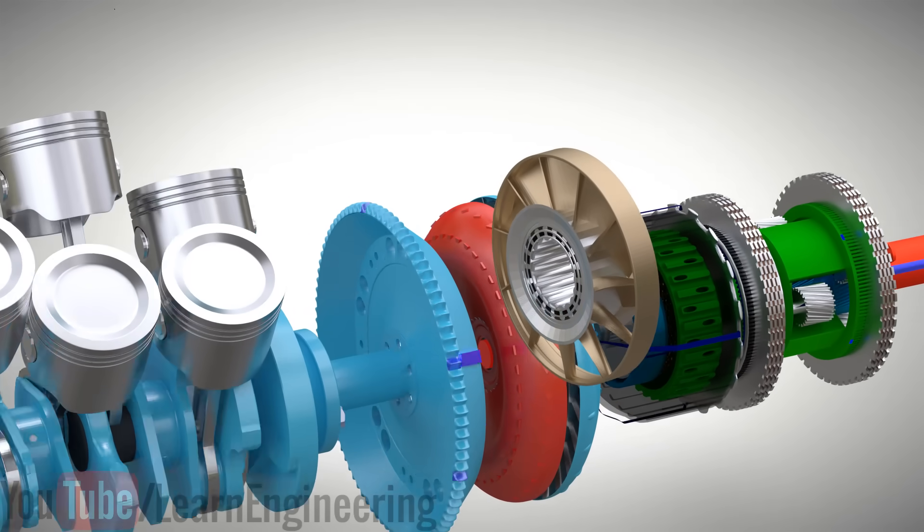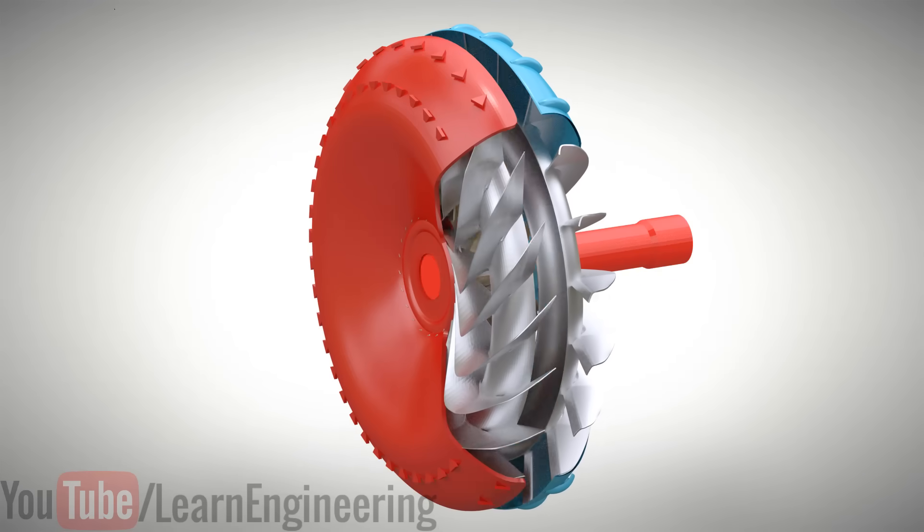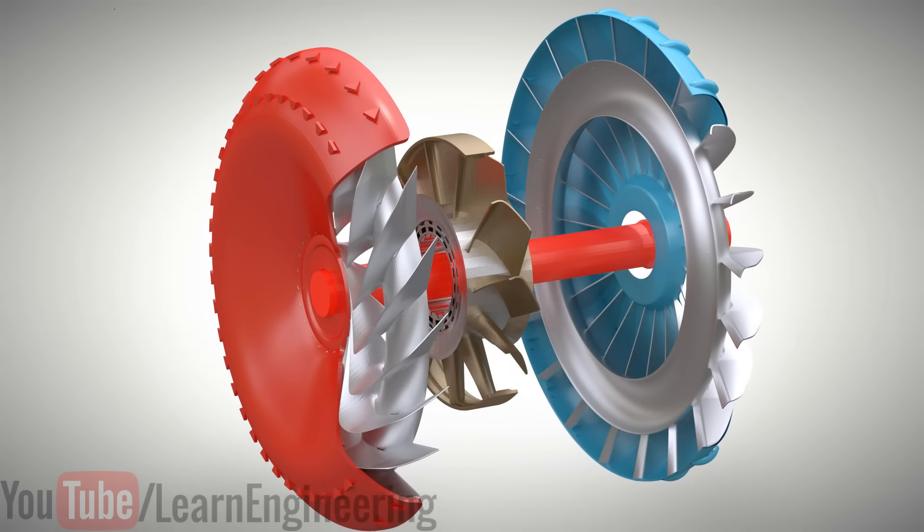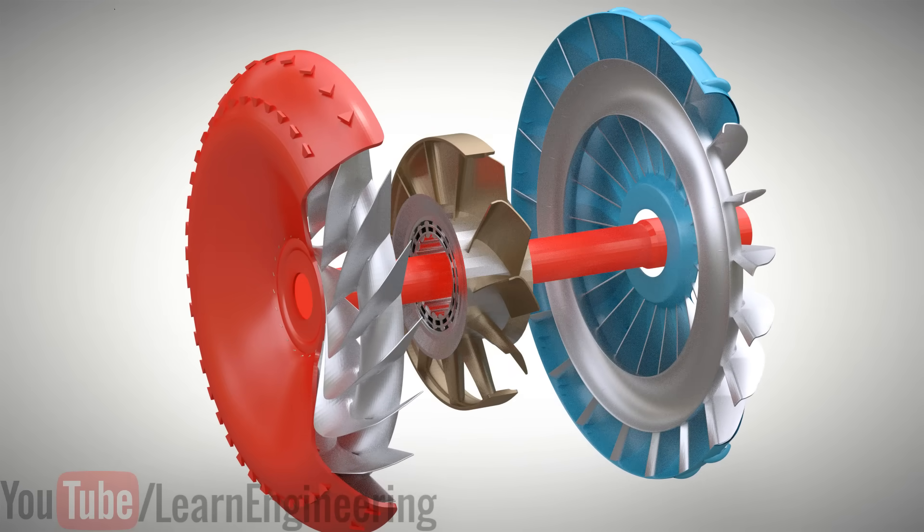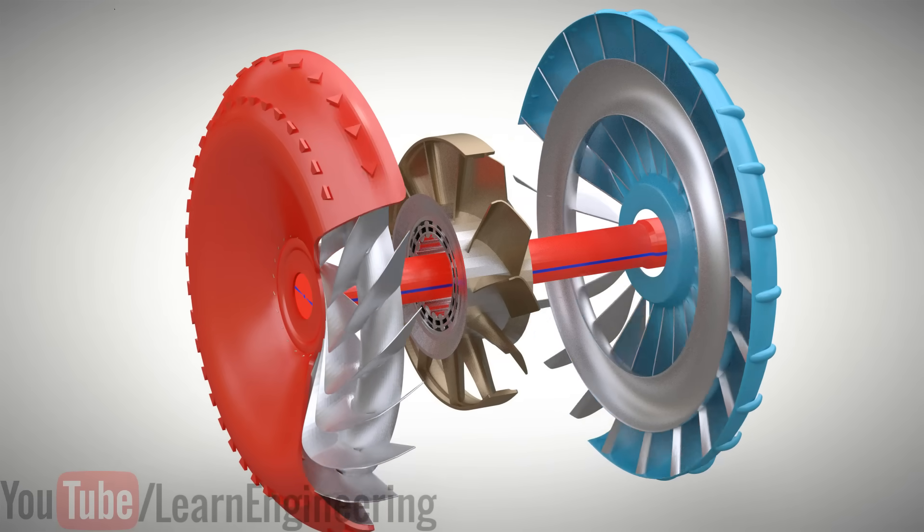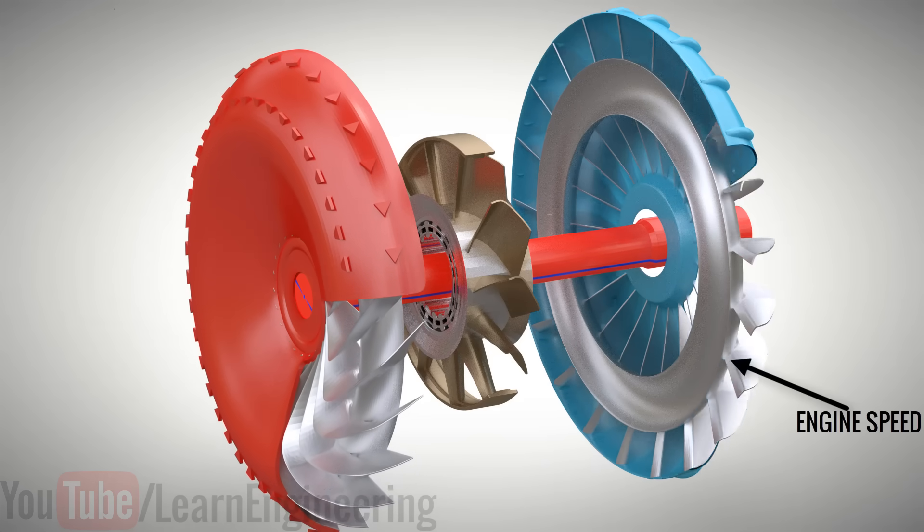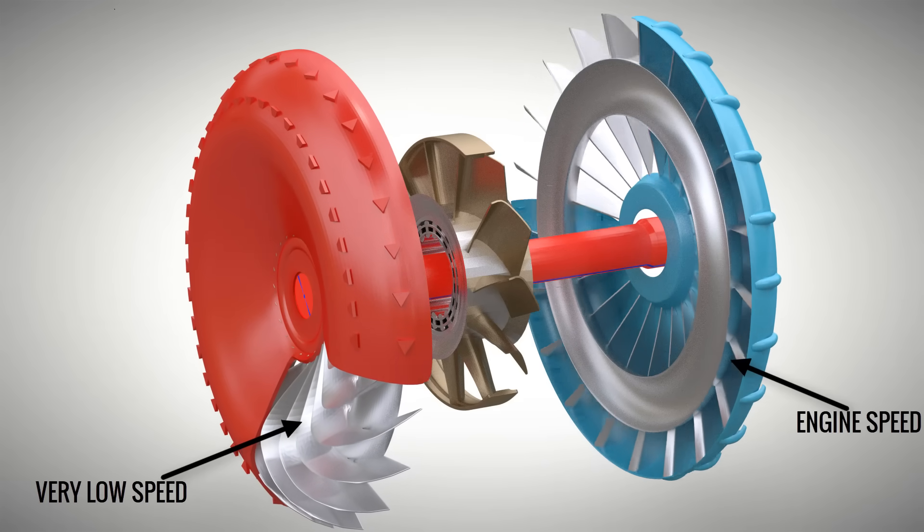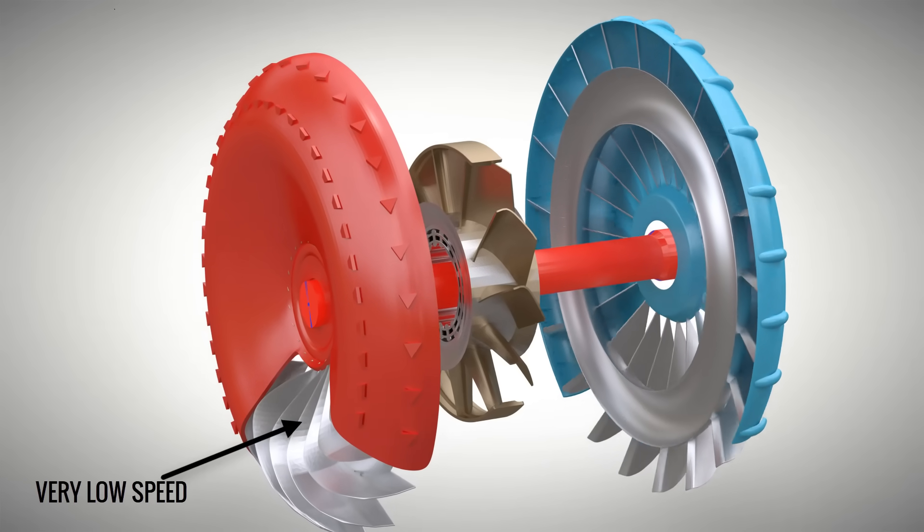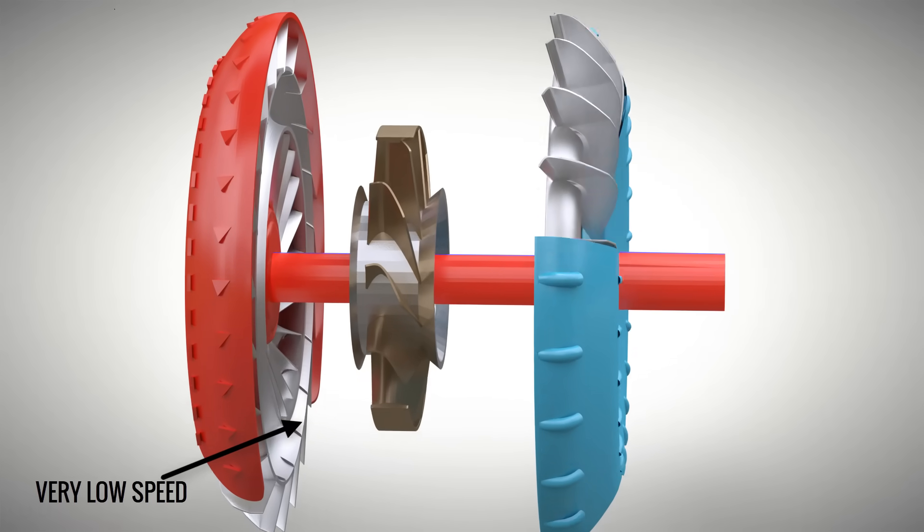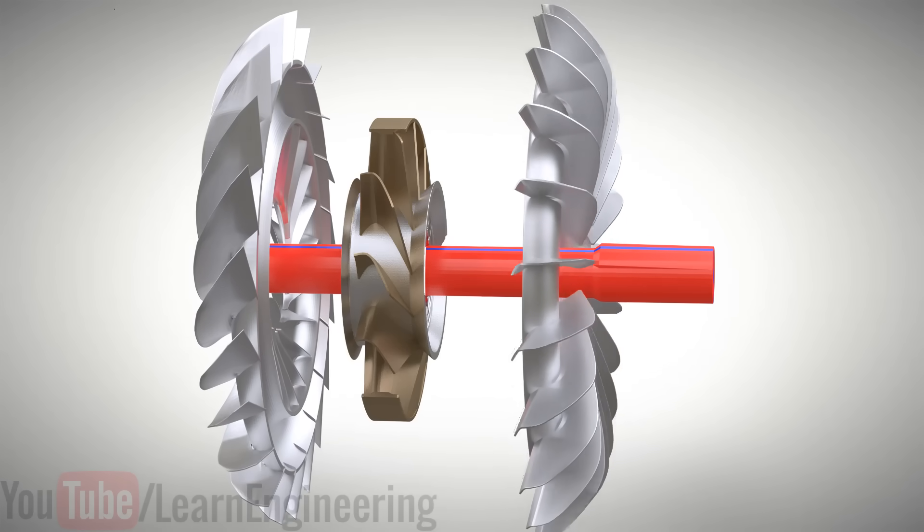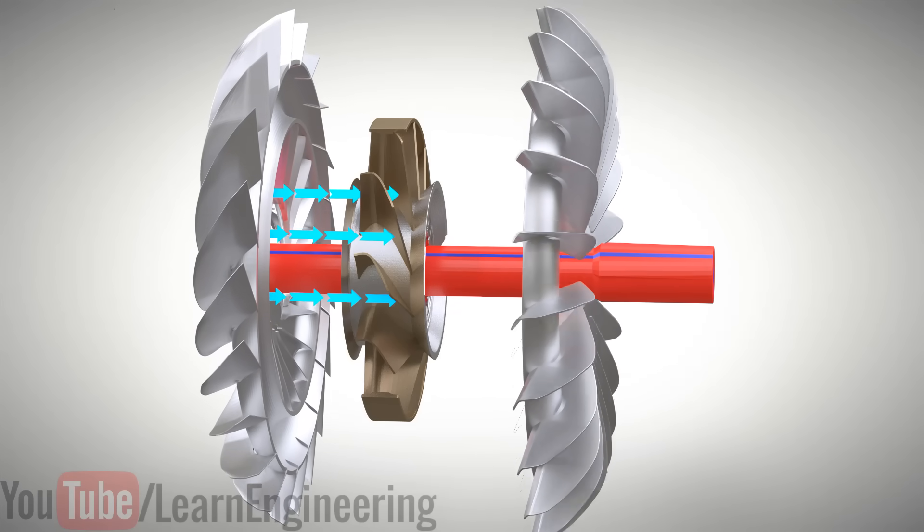For ease of understanding, let's increase the spacing between the components. Now, consider the situation as the vehicle starts. Here, the pump is spinning at the engine speed, but the turbine speed is lower and is slowly increasing. This means that the fluid, which leaves the turbine, travels almost axially, as shown.